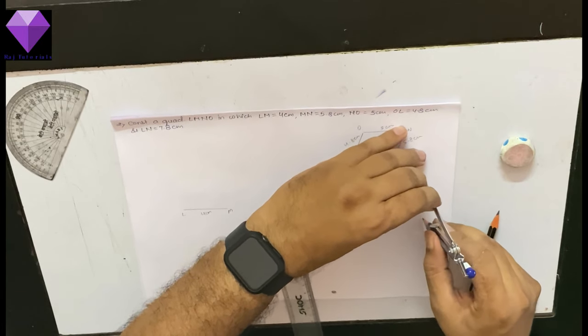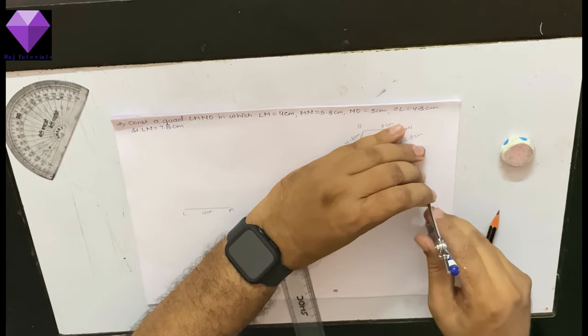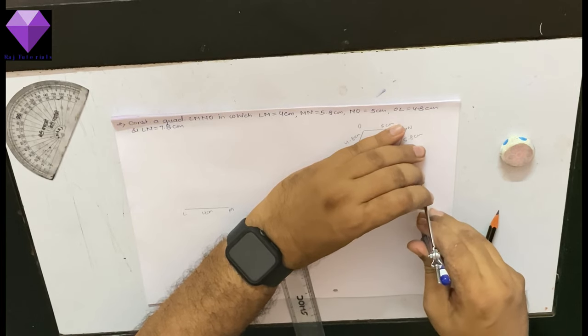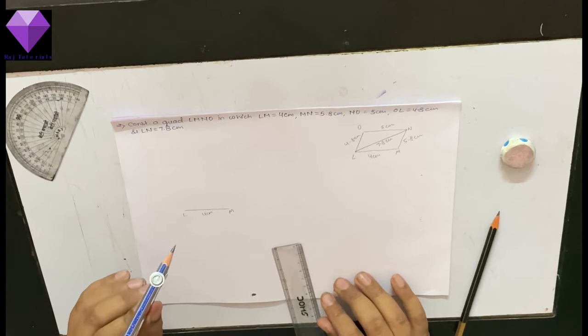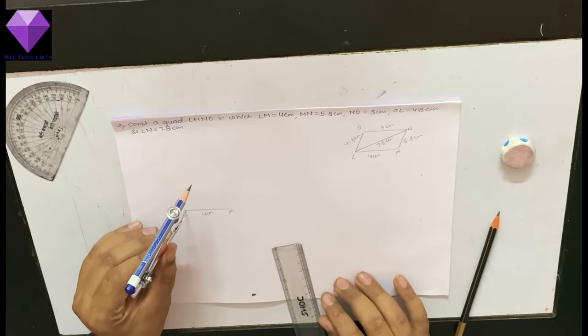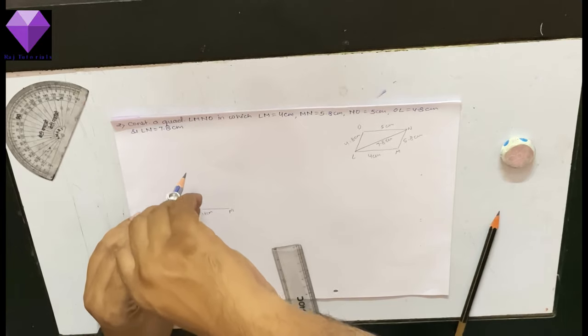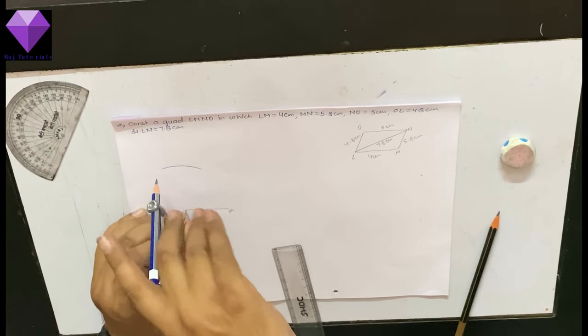First, I am taking 4.8 cm. With my measurement in the rounder 4.8 cm and L as center, I am marking one arc to get O point, first arc.